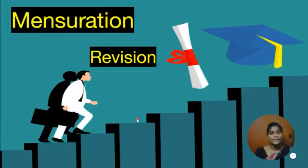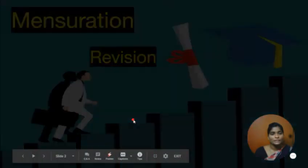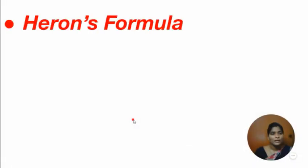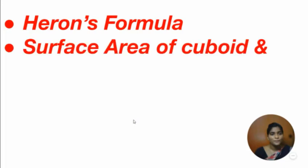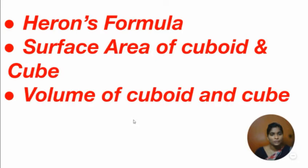In the previous class, we have learnt about mensuration. In mensuration, we have learnt about Heron's formula, surface area of cuboid and cube, and volume of cuboid and cube. We shall revise one after the other.